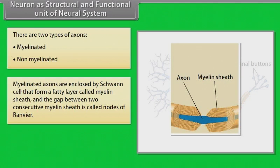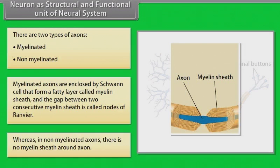There are two types of axons: myelinated and non-myelinated. Myelinated axons are enclosed by Schwann cells that form a fatty layer called the myelin sheath. The gap between two consecutive myelin sheaths is called the nodes of Ranvier. In non-myelinated axons, there is no myelin sheath around the axon.